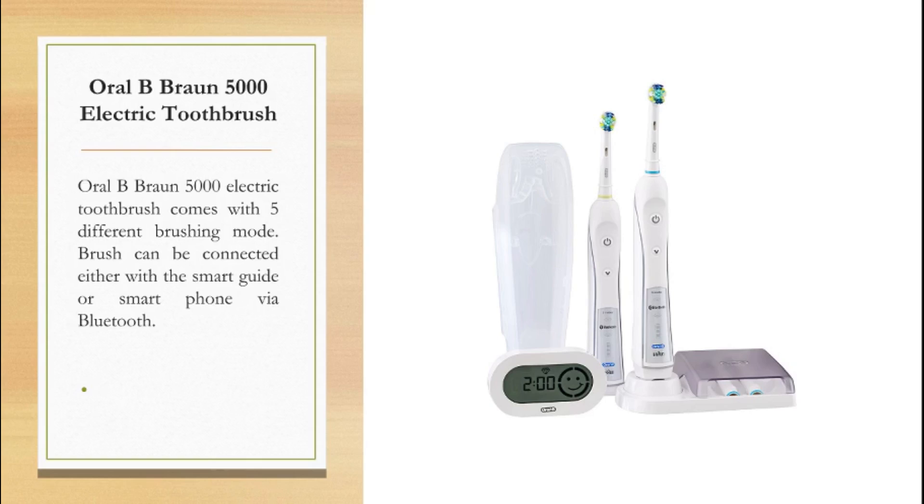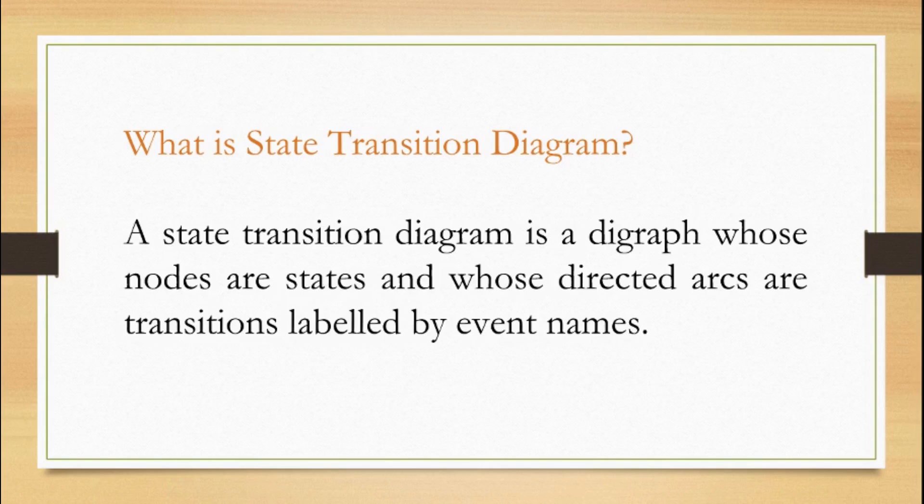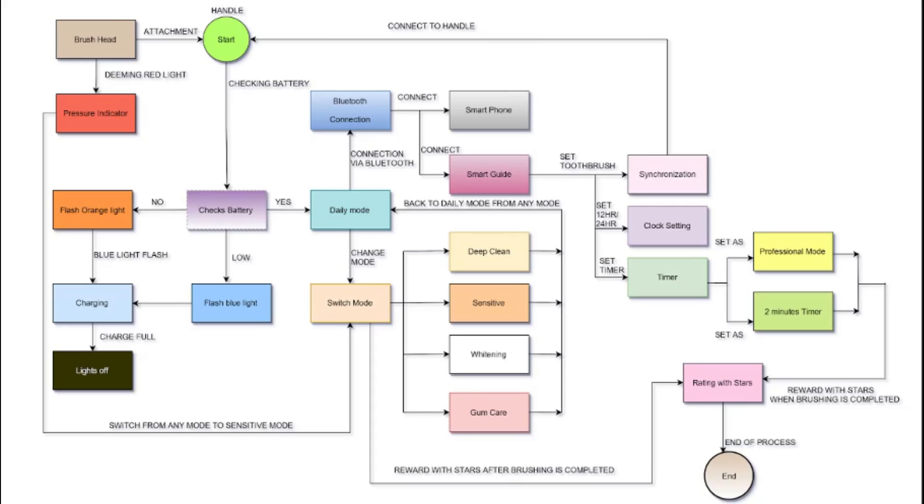Before moving directly to the state transition diagram of Oral-B Braun toothbrush, we must first know what is a state transition diagram. It is a diagram whose nodes are states and whose directed arcs are transitions labeled by event names. You will be clear about this definition with the explanation of state transition diagram of Oral-B Braun 5000 electric toothbrush.